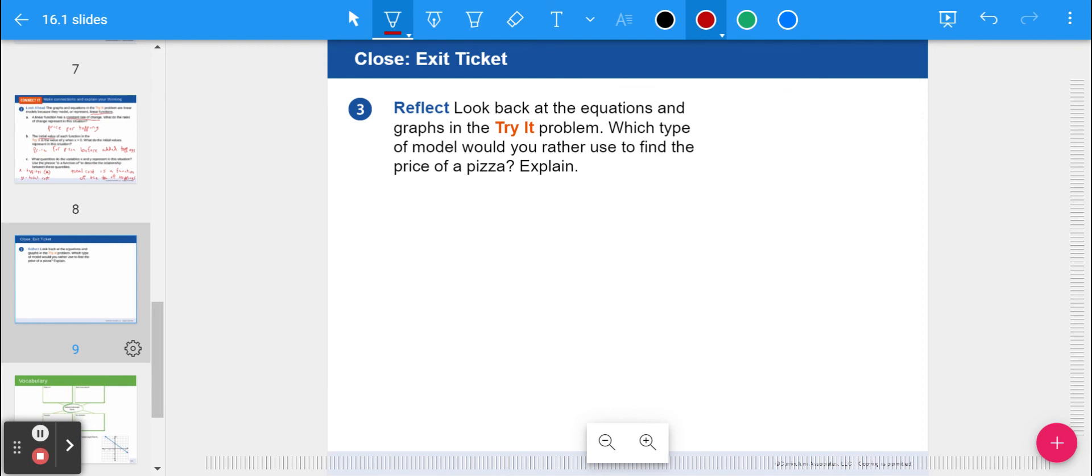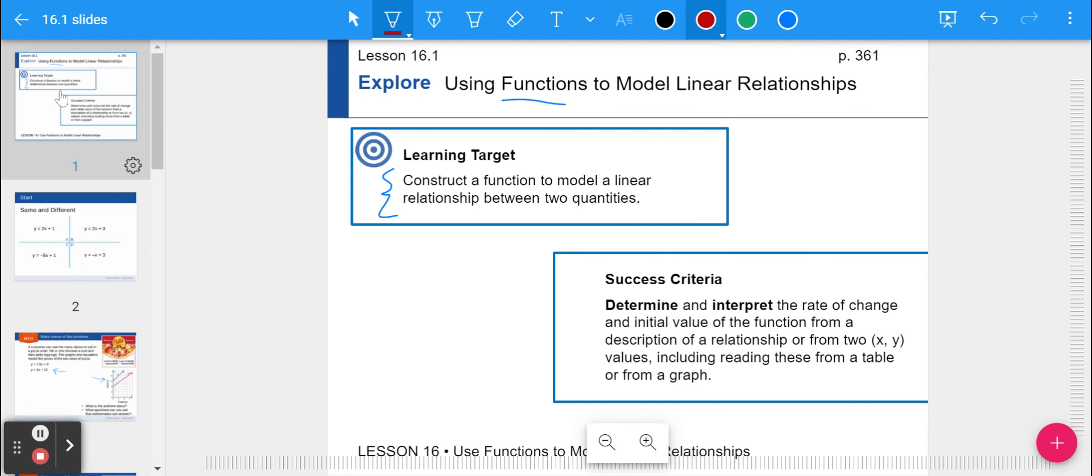That's it for this lesson. The reflect question is which type of model would you rather use to find the price of pizza - the equation which showed the price per topping plus the starting price, or the graph which modeled it more visually? You decide. I want you to go back to our learning target for today, which was to construct a function to model a linear relationship between two quantities, something that has a constant rate of change. That's lesson 16.1. We'll see you next time.